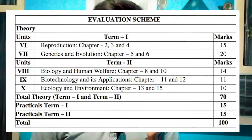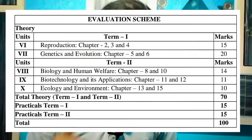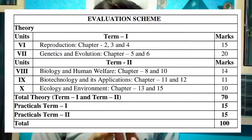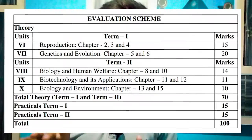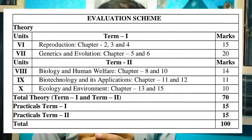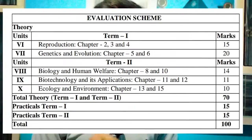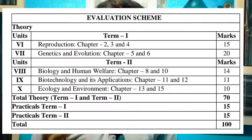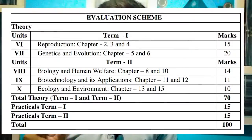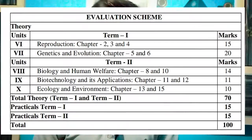For Term 1: Unit 6 is Reproduction, covering chapters 2, 3, and 4, with a weightage of 15 marks. Unit 7 covers chapters 5 and 6, with a weightage of 20 marks. The total weightage for Term 1 is 35 marks.